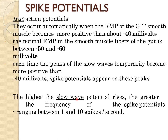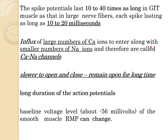The normal resting membrane potential of the gut is between minus 50 to minus 60 millivolts. Each time the peaks of slow waves temporarily become more positive than minus 40 millivolts, spike potentials appear. The higher the slow wave potential rises, the greater the frequency of spike potentials, ranging between 1 to 10 spikes per second. These spike potentials last 10 to 40 times as long in GIT muscle as in large nerve fibers, each spike lasting 10 to 20 milliseconds. A large influx of calcium ions along with a small number of sodium ions occurs through calcium-sodium channels.